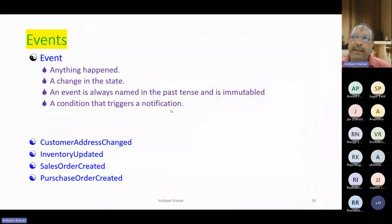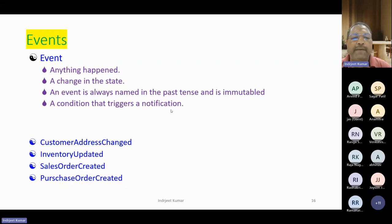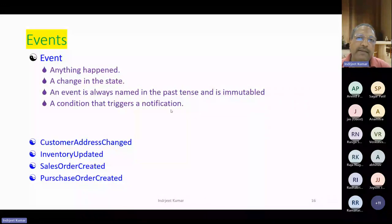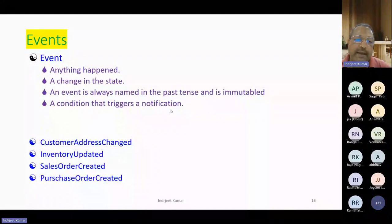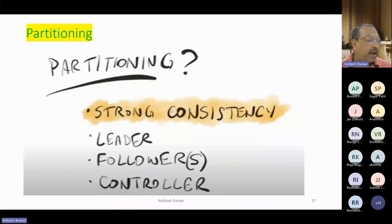Everything is an event in Kafka. An event is anything that happens — a change in state, like when we are speaking. Events are always named in the past tense as they are immutable. They contain a trigger and notification. Common examples: customer address change update, sales order created, purchase order created.